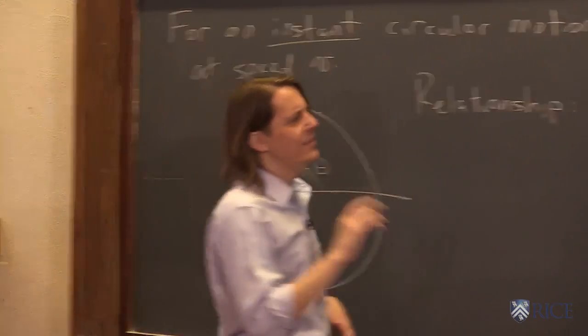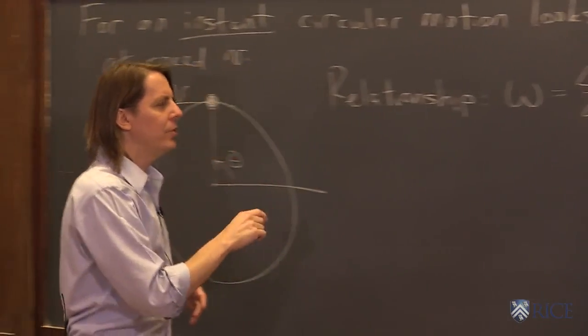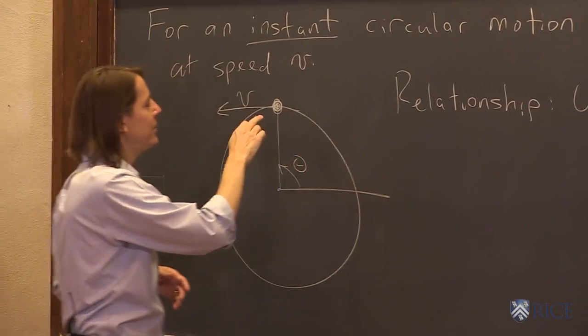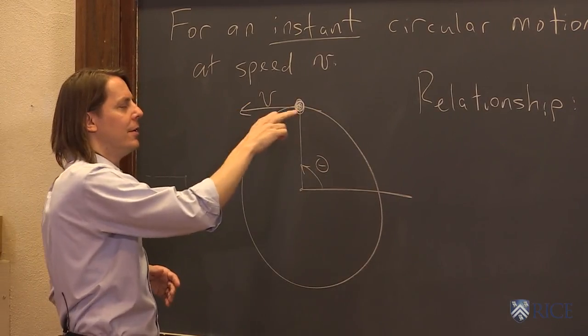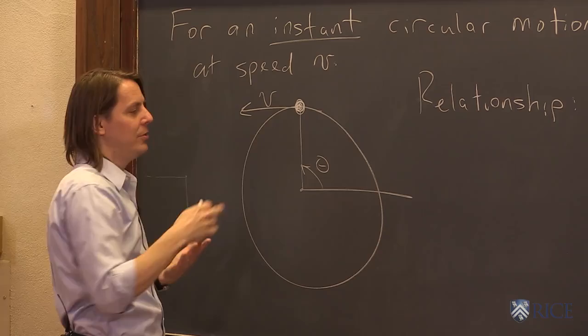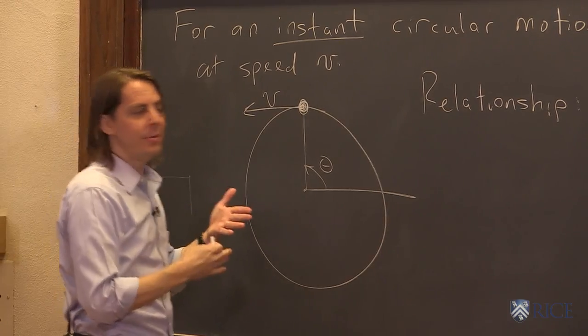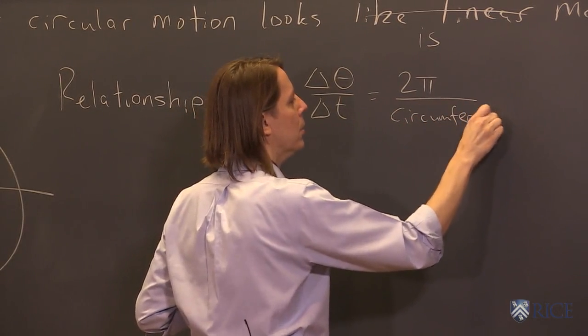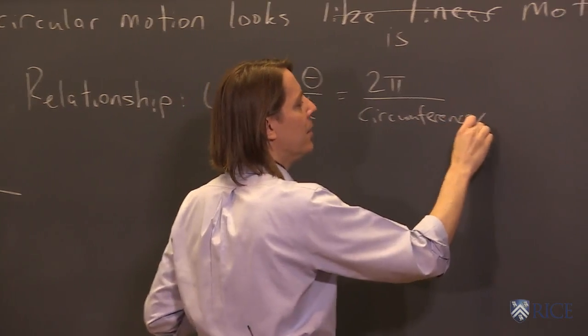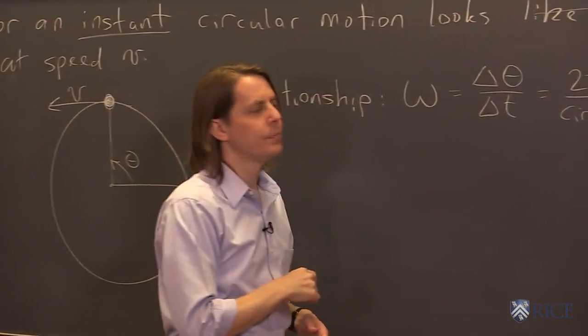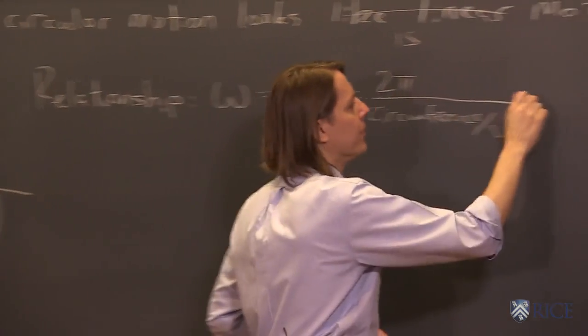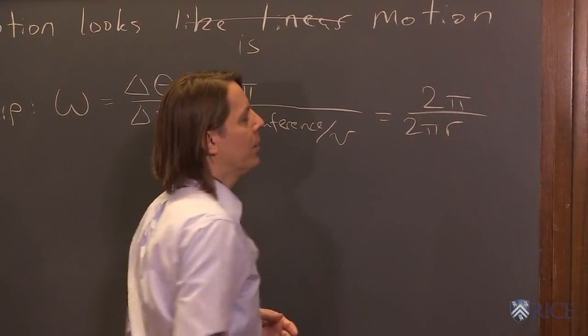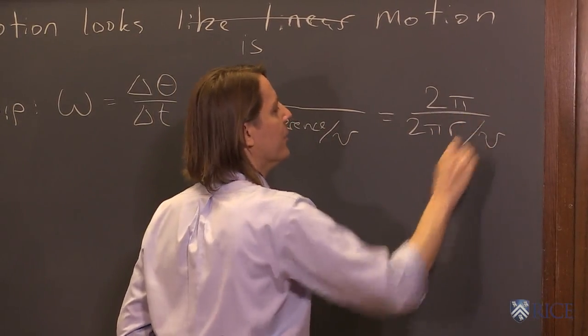And what is delta t? So to get all the way around 2π, it must go a distance equal to the circumference, and it must take a time equal to the circumference divided by v. Because if it's going at a constant speed all the way around, then the time is just the distance divided by the speed. So we could put the circumference divided by v, and that's equal to delta t. And what's the circumference? So 2π over the circumference is 2π times the radius, that divided by the speed v.